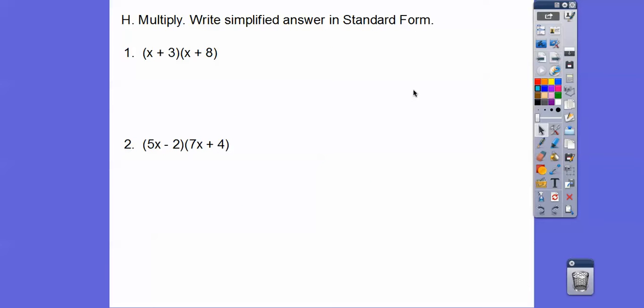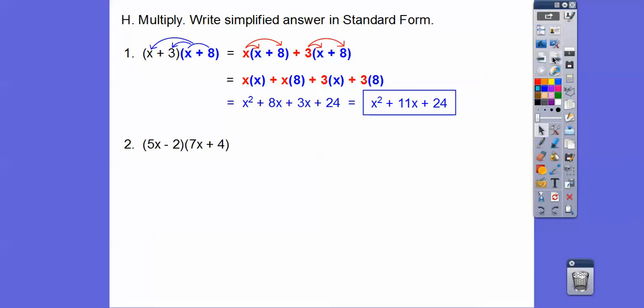So multiply. I'm going to show you two methods here. First method here, I'm going to distribute this x plus 8 through. So times this and then times this. There it is right there. Then we'll distribute the x through this one and the plus 3 through this one right here. There's that. Clean it up. And then combine like terms. You should get that.